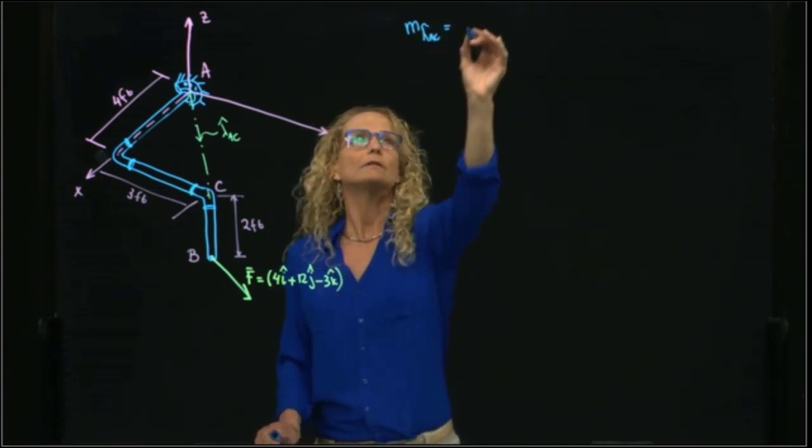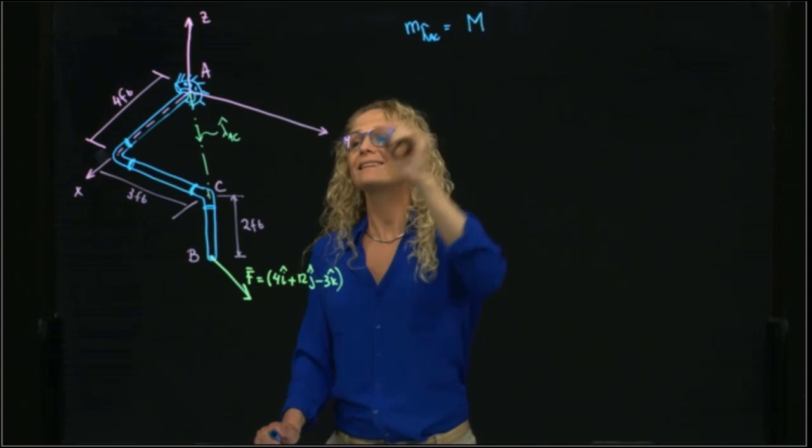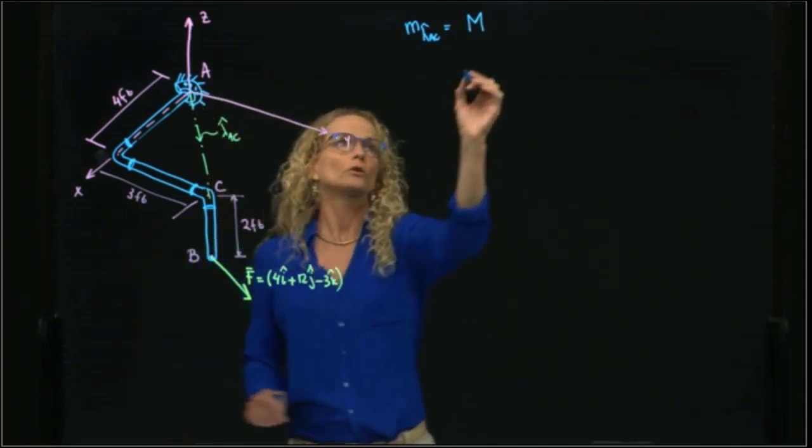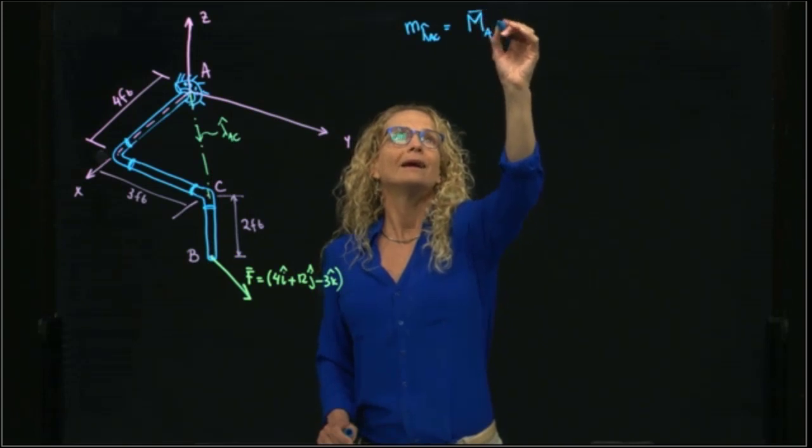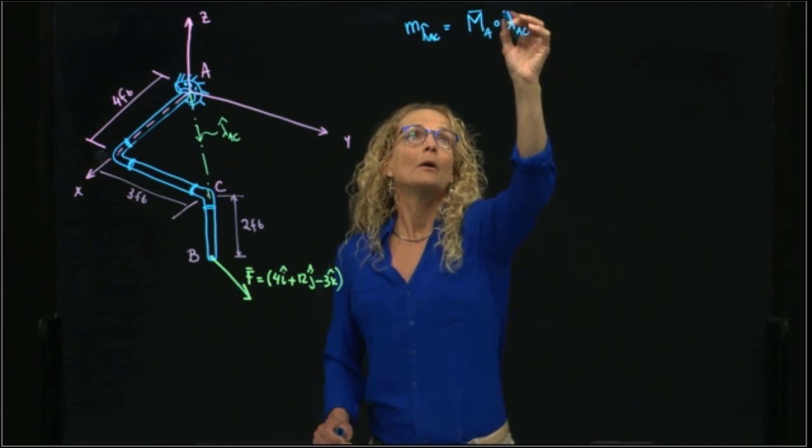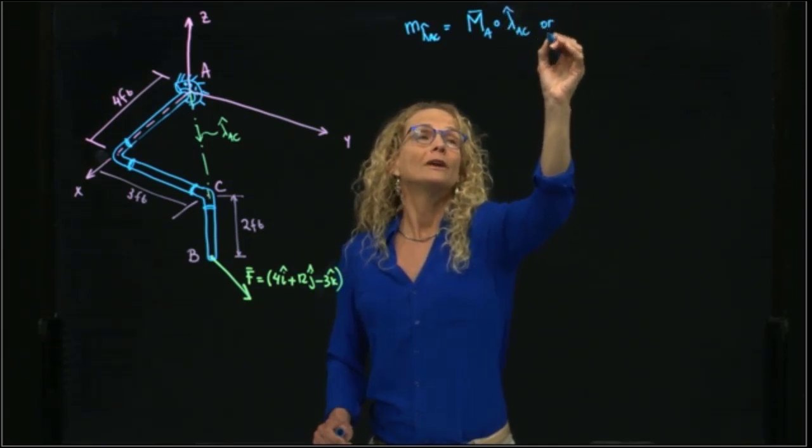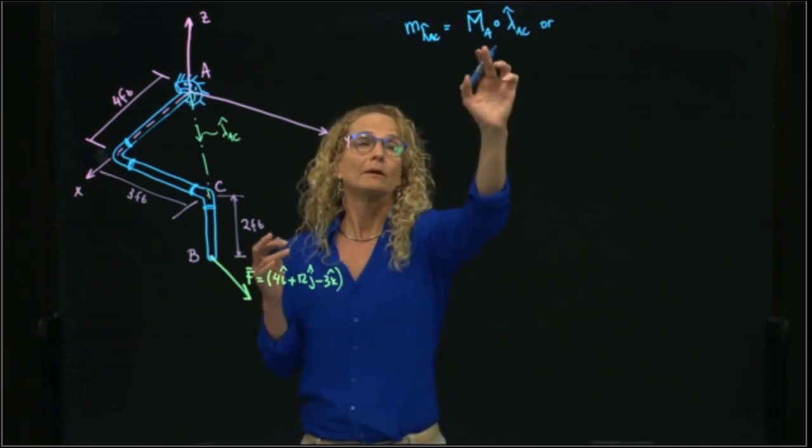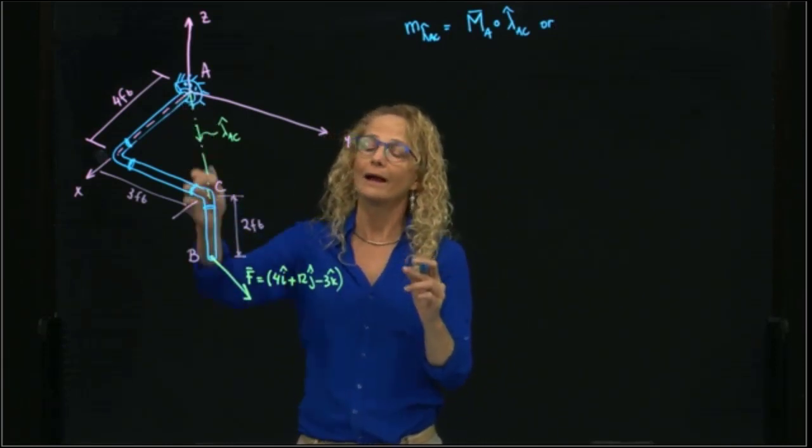The definition is that we can calculate the moment with respect to any point of the axis. So it could be the moment at A dot the unit vector AC, but it could also be, since I can calculate it by any point that is located at the axis...